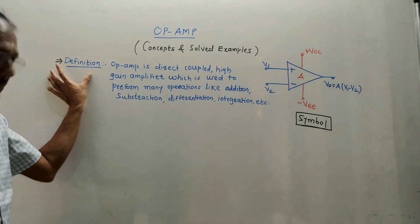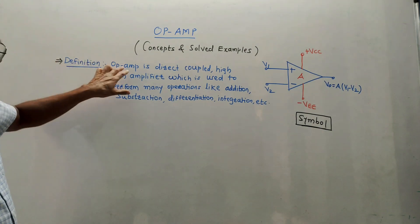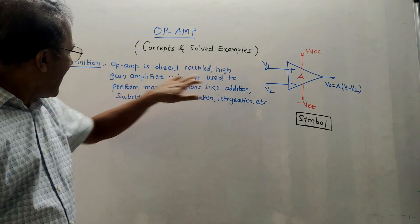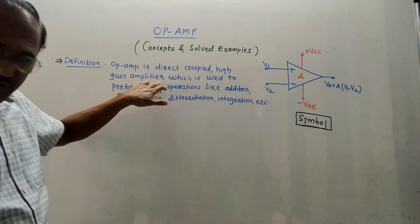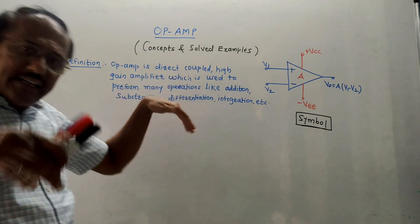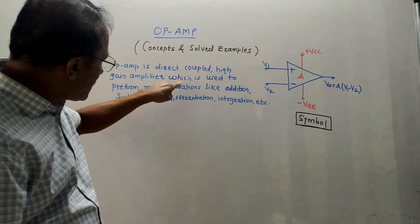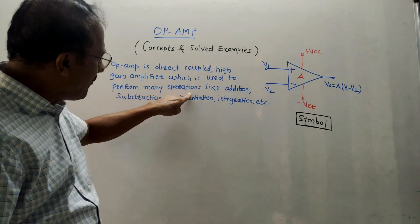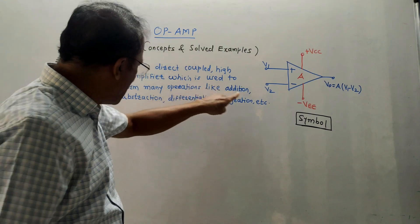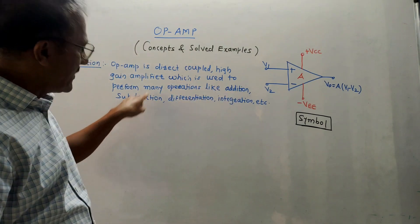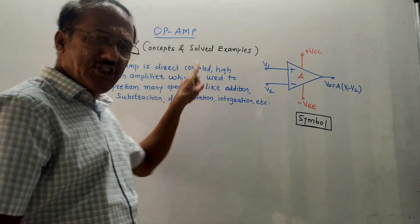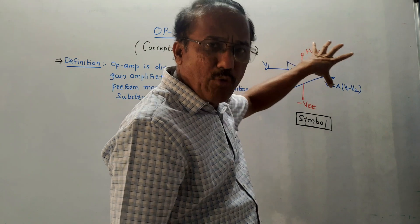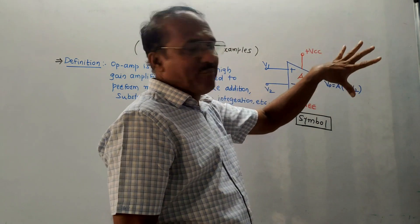First, the definition of Op-Amp. Op-Amp is a direct coupled high gain amplifier. The ideal gain of Op-Amp is infinity, and it is used to perform many operations like addition, subtraction, differentiation, integration, and so on. This is the symbol of Op-Amp.